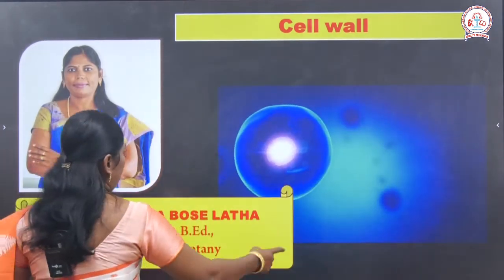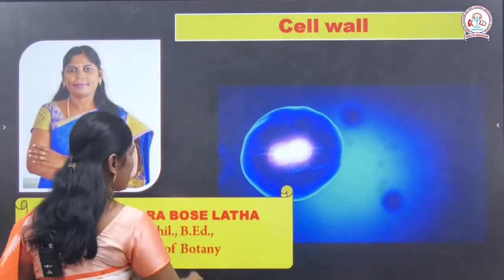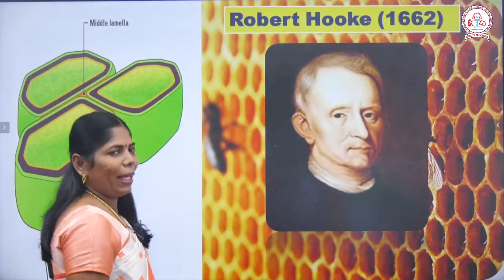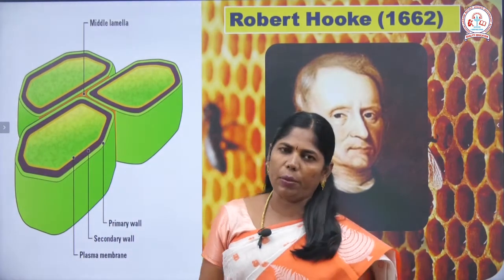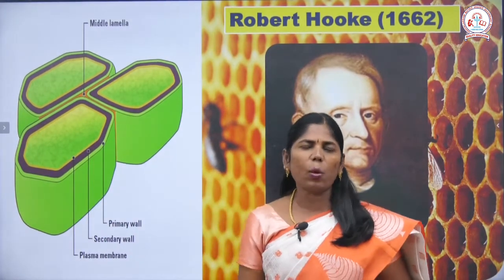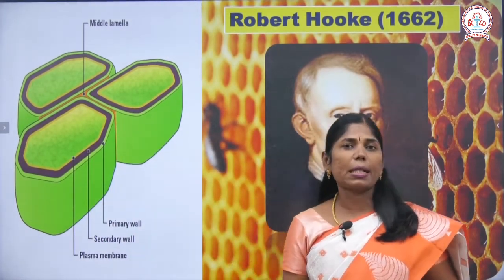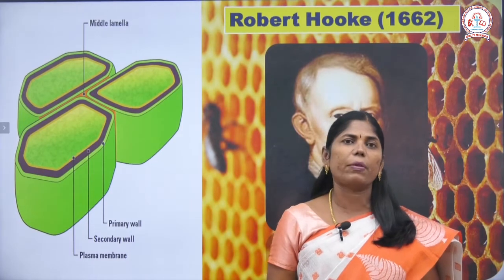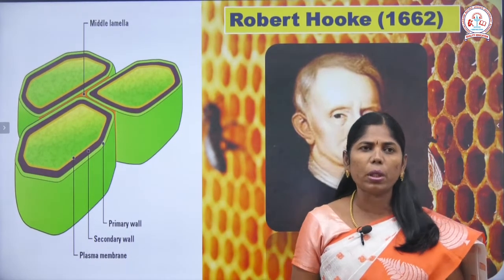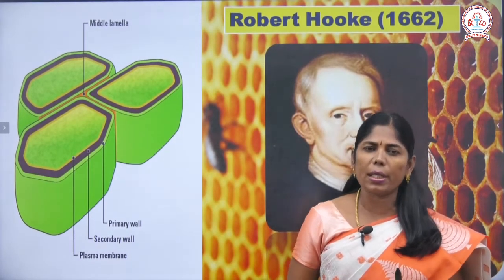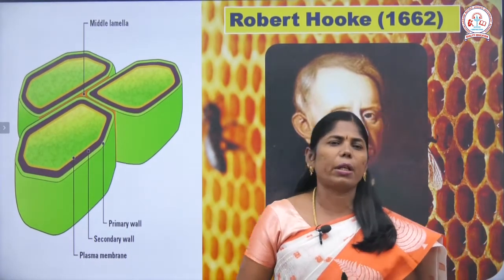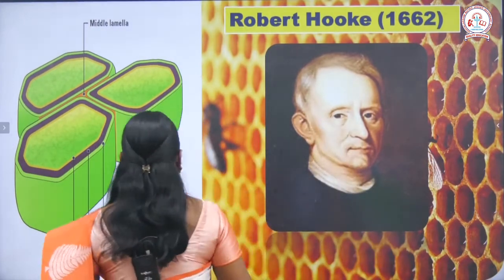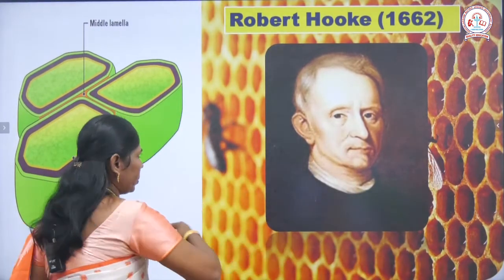So, what is the cell wall? The cell is covered by a protective layer known as the cell wall. The cell wall was first discovered by Robert Hooke, who also first discovered the cell itself.